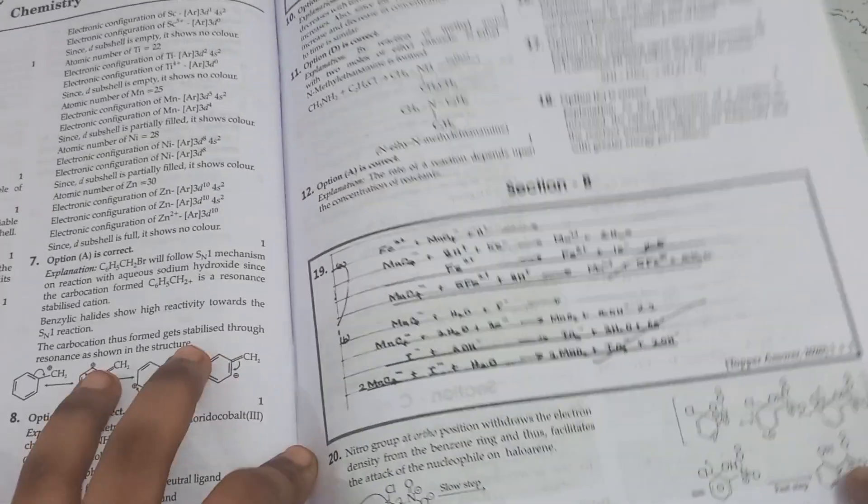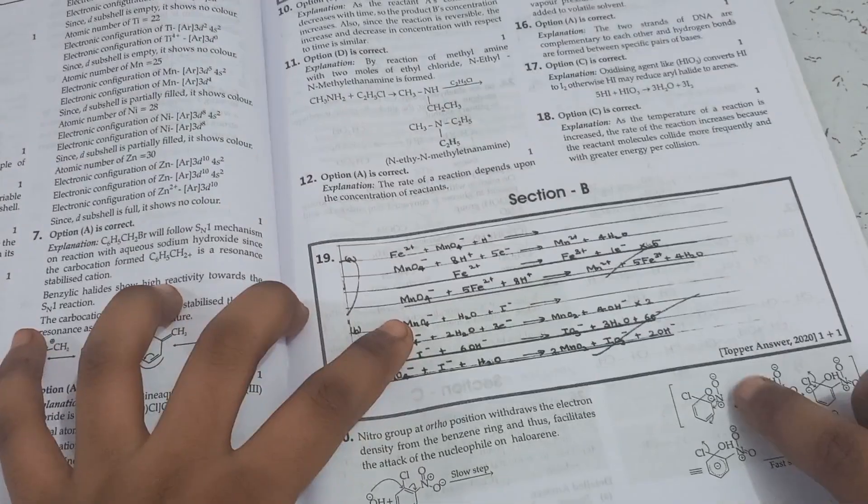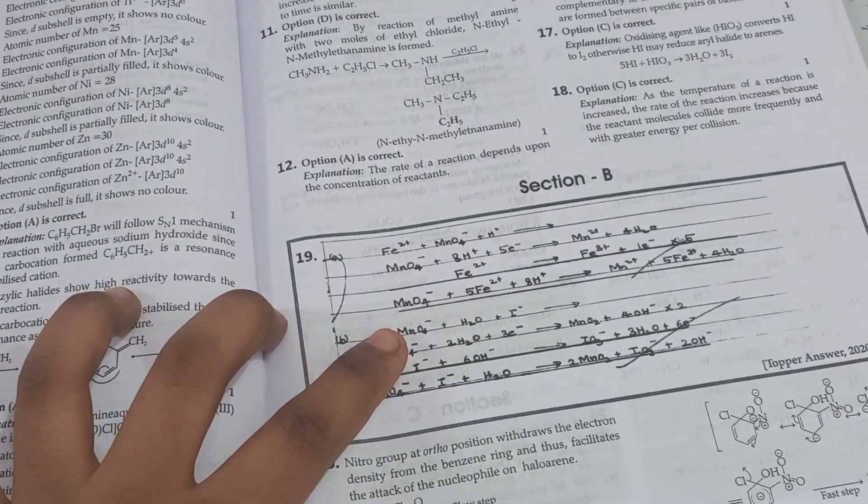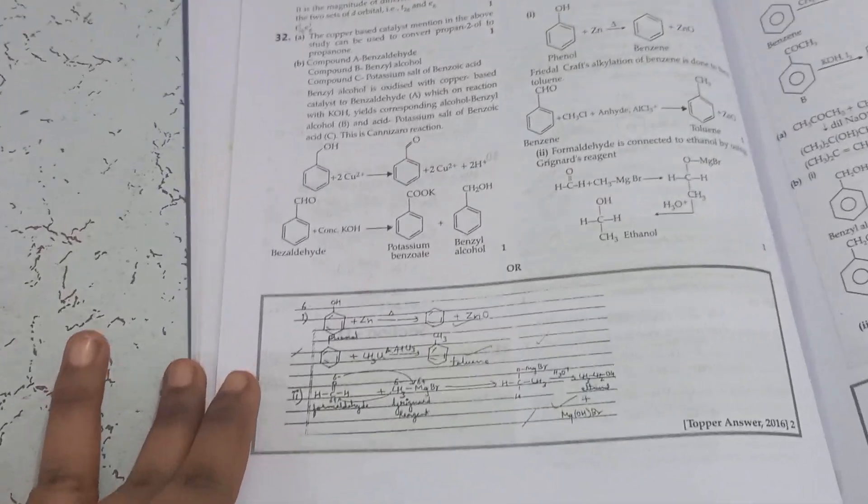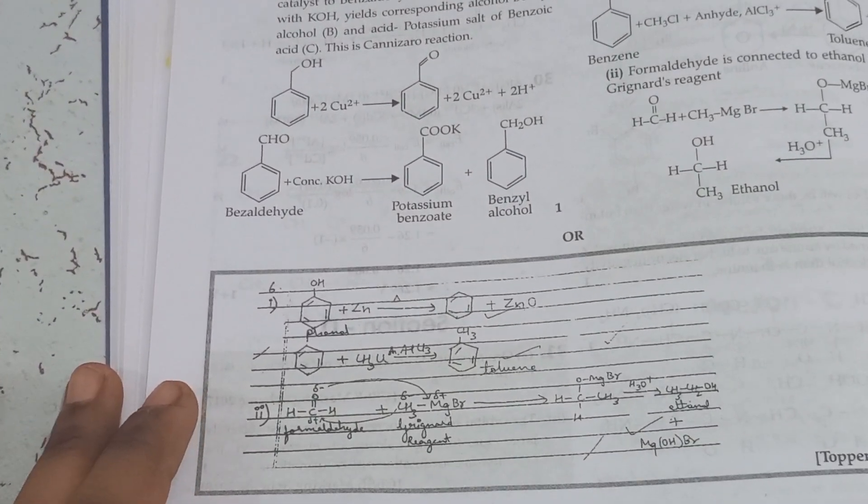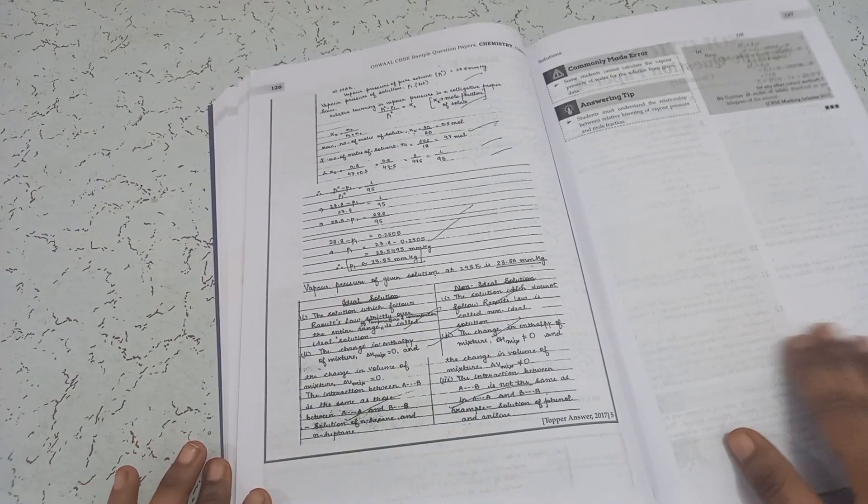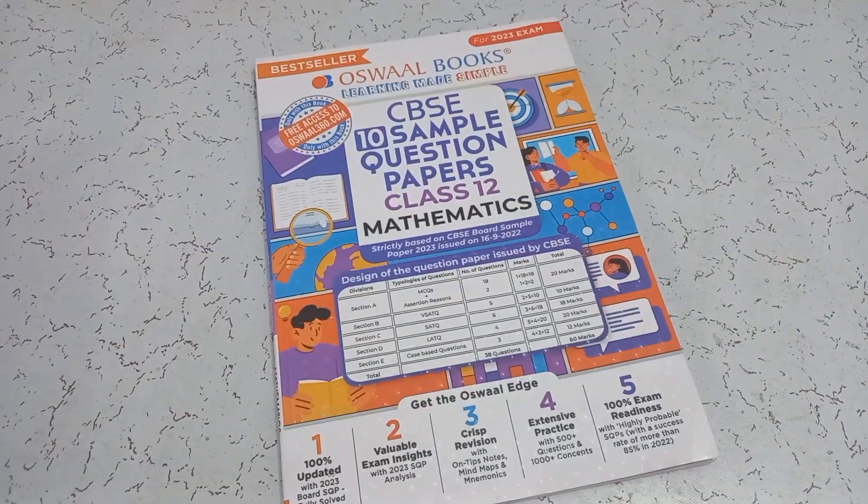Now, there's another perk of having this book is Toppers Answer Sheet. This was all about chemistry book. Now, let's come to maths.